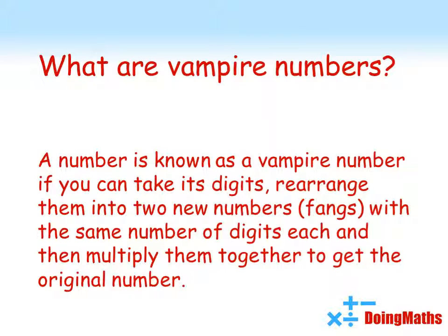First of all, the formal definition. A vampire number is a number that if you take its digits, rearrange them into two new numbers, which we're going to call fangs, hence the vampire. These fangs have got to have the same number of digits each, then if you multiply them together, you should get back the original number.